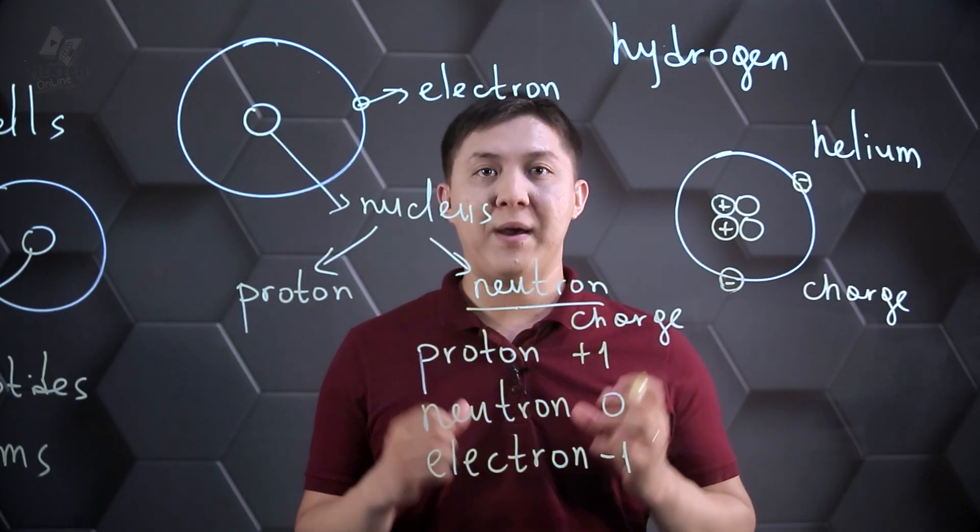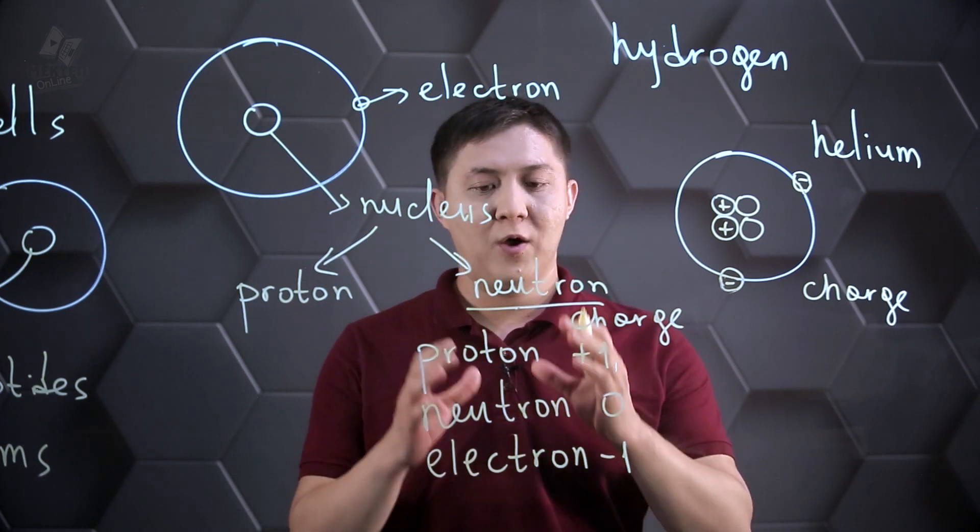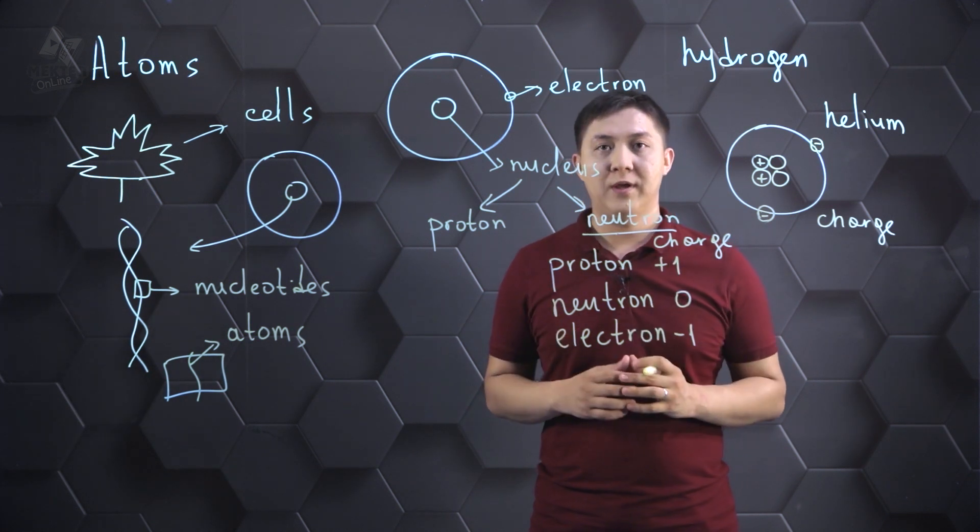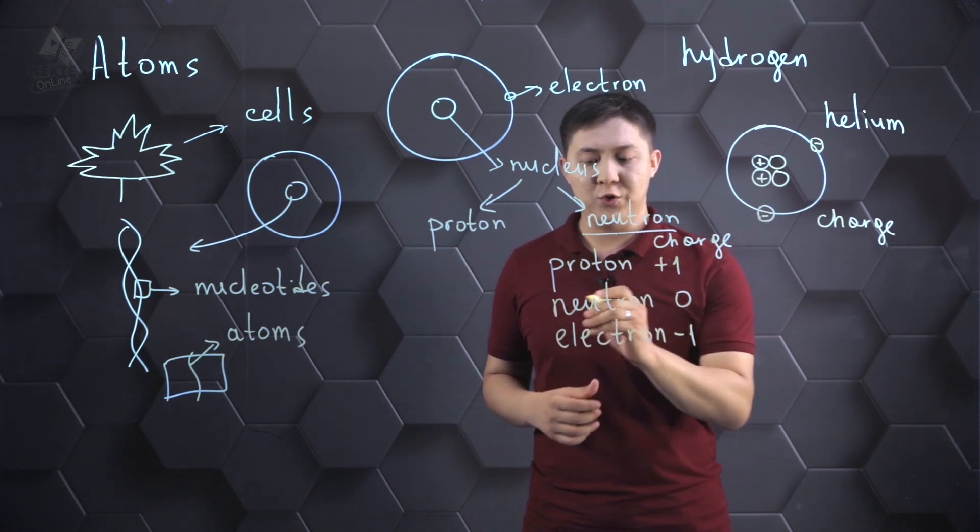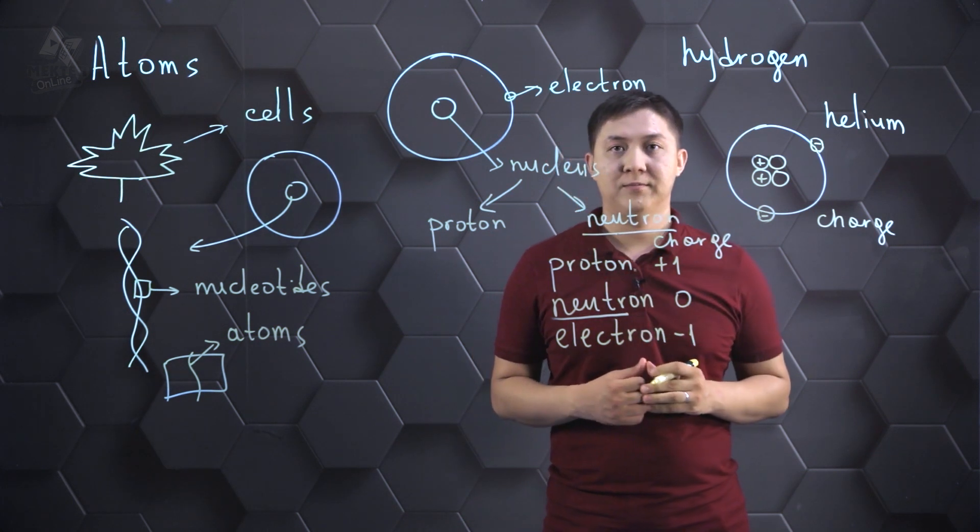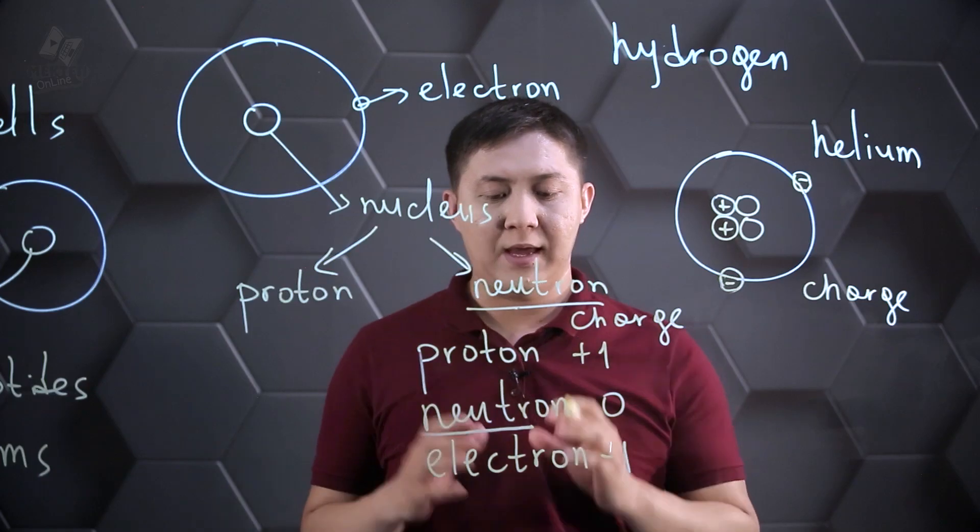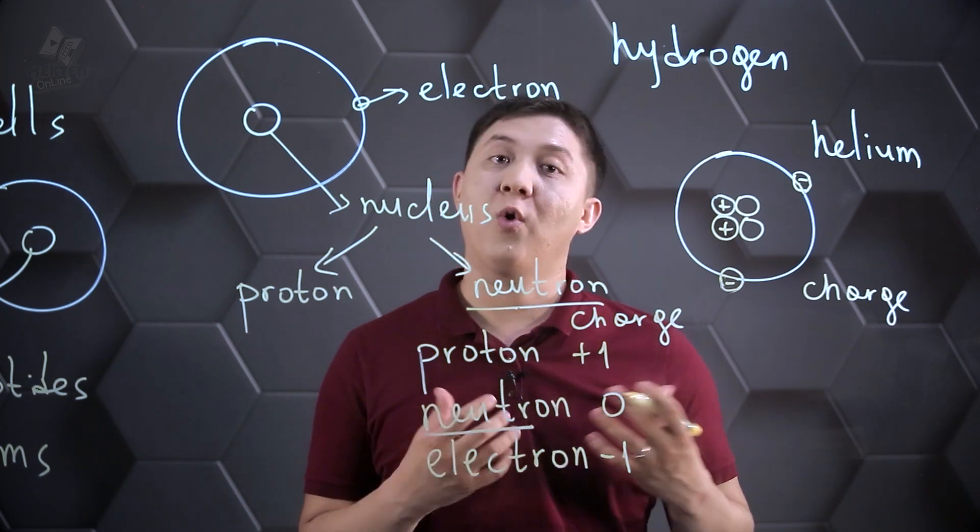Relative charge of neutron is zero and relative charge of electron is negative one. How can we memorize it quickly? Proton is positive. Neutron comes from the word neutral. So, it has a neutral charge. Electron is always negative.